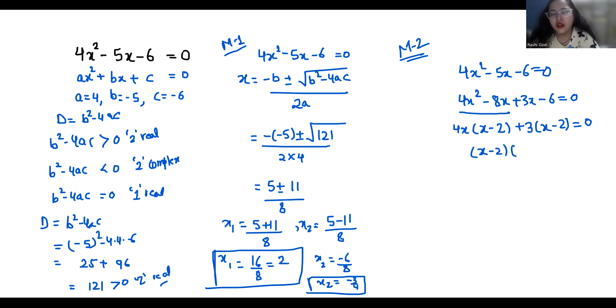So, (4x + 3)(x - 2) = 0. First, x - 2 = 0, so x = 2. And 4x + 3 = 0, so 4x = -3, x = -3/4.